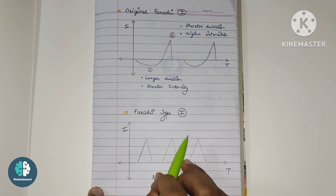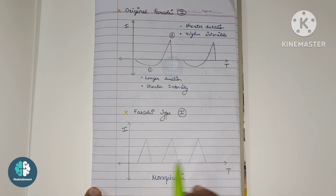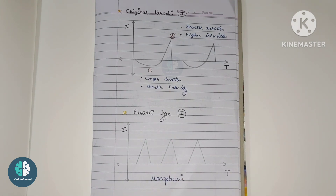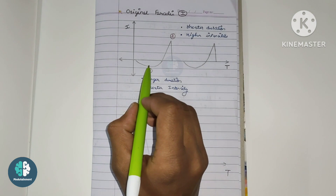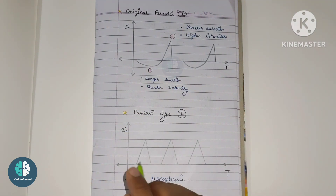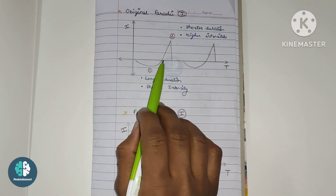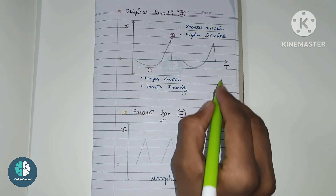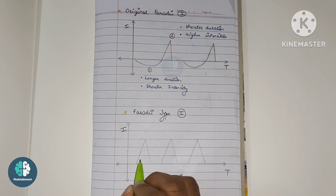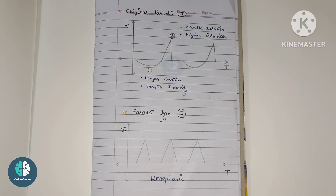For the faradaic type current, it uses a monophasic waveform with intensity and time duration plotted. In modern electronic circuits, the monophasic waveform is used because the first phase of the original biphasic waveform is not required for stimulation, since faradaic type current is interrupted DC. So the first phase is removed and only the second phase remains, giving us the monophasic faradaic type current.